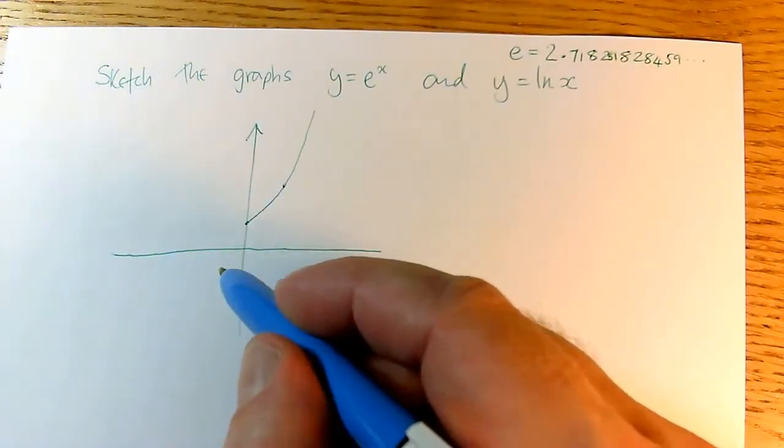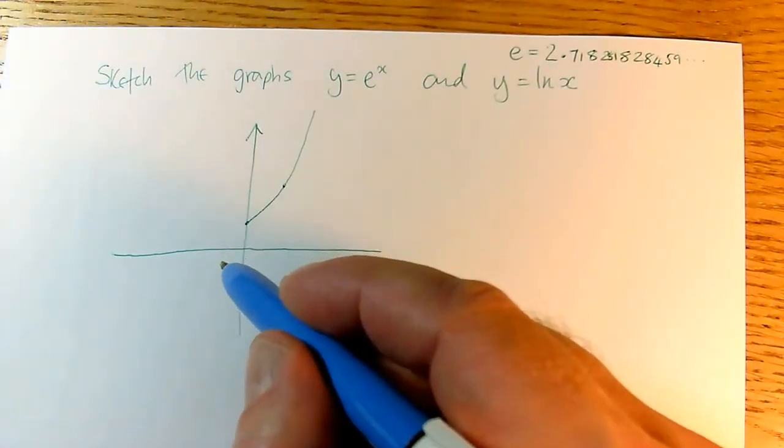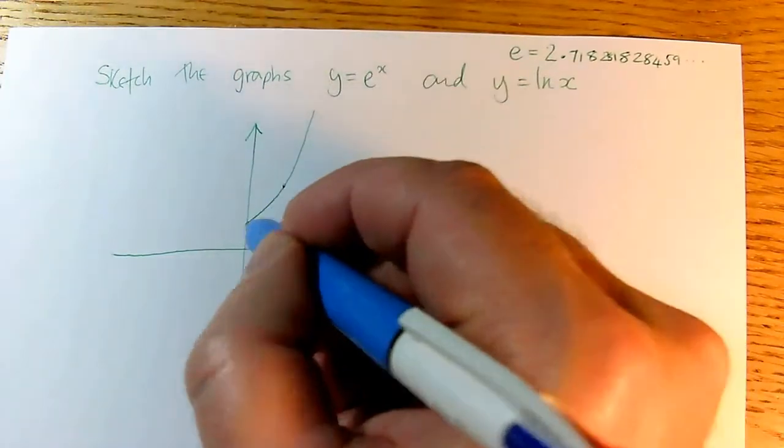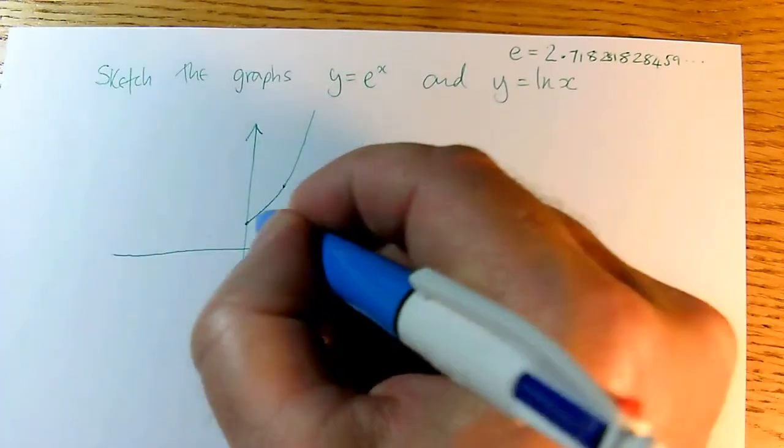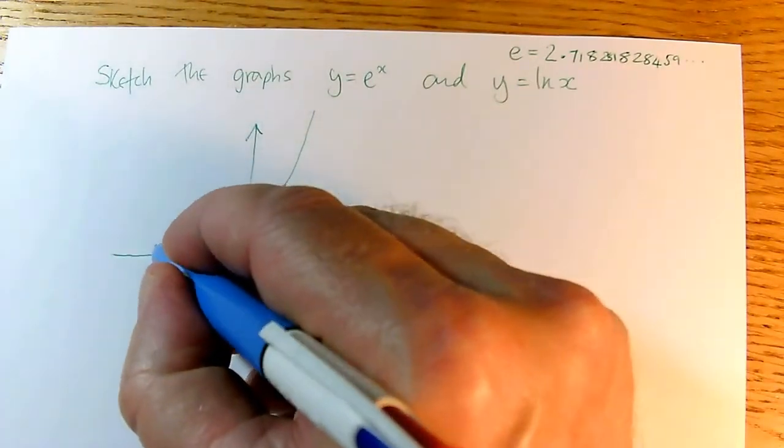And then the corresponding negative powers, remember a negative power causes 1 overness. So e to the power minus 1 is 1 over e, which is down here. And e to the power of minus 2 is closer to 0. And it gets very close to 0 very quickly, but it never reaches 0.